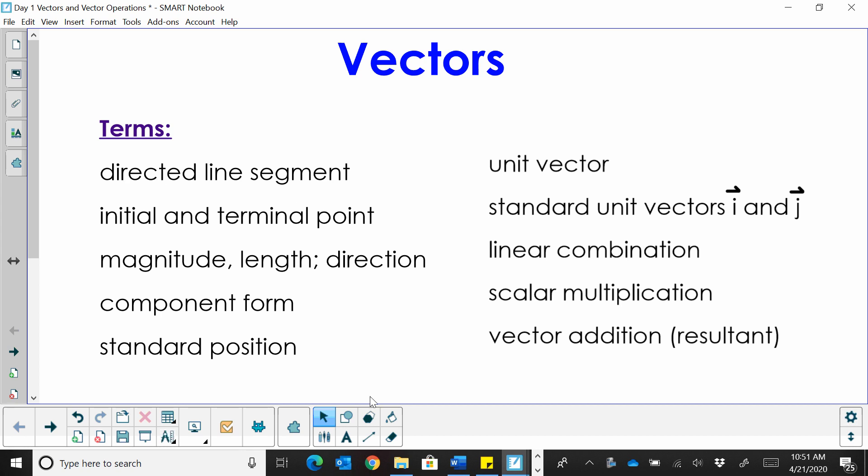We're going to look at what is a directed segment, what is an initial terminal point and how does that help us, what is the magnitude which is also known as the length that also gives us direction, what is component form, what is the standard position of a vector, what's a unit vector, what's a standard unit vector in a linear combination, and how do you calculate scalar multiplication, and how do you add vectors to get a resultant vector. Those are all the topics we're going to cover in these first few videos.